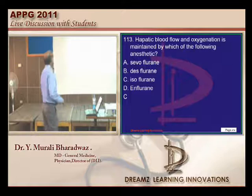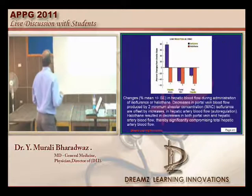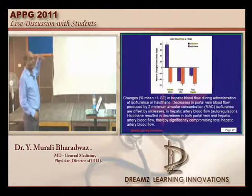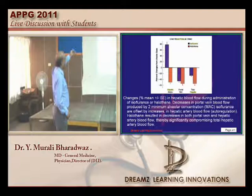Hepatic blood flow is maintained by which drug? Isoflurane has the advantage that it maintains hepatic blood flow and oxygenation of the liver. If you compare liver blood flow with isoflurane versus halothane, hepatic artery blood flow is maintained by isoflurane but decreased by halothane.